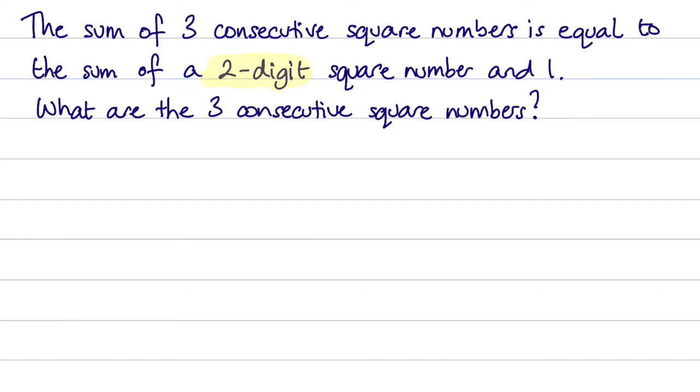We've got 1, 2 squared is 4, 3 squared is 9, 4 squared is 16, 5 squared is 25, 6 squared is 36, 7 squared is 49, 8 squared is 64, and 9 squared is 81.